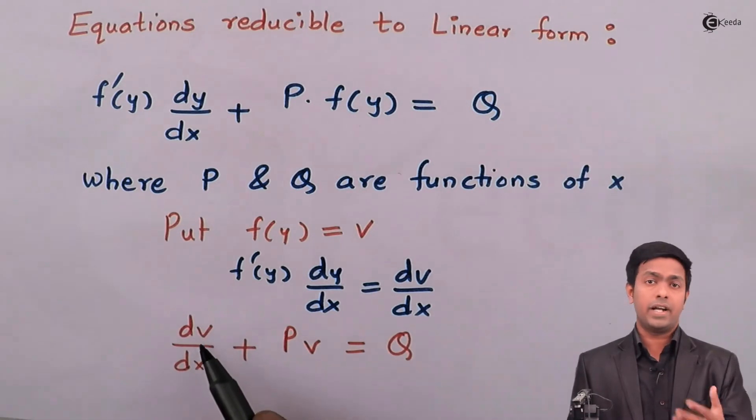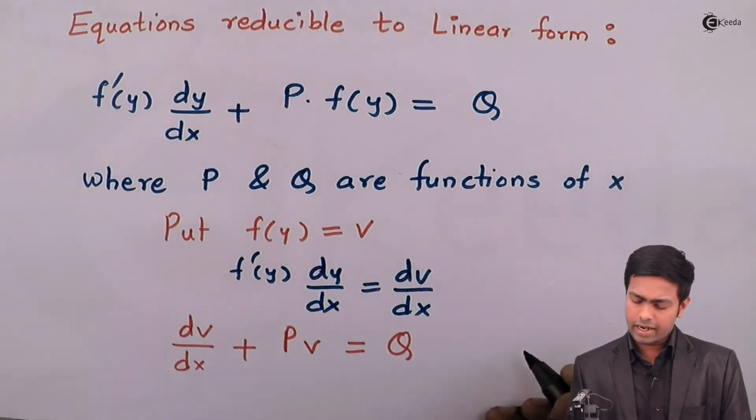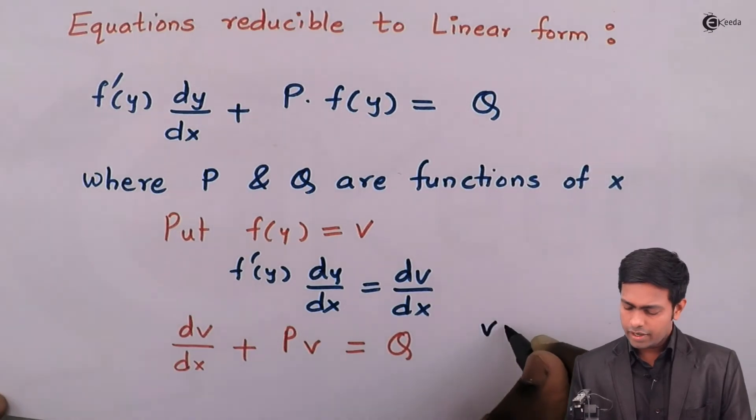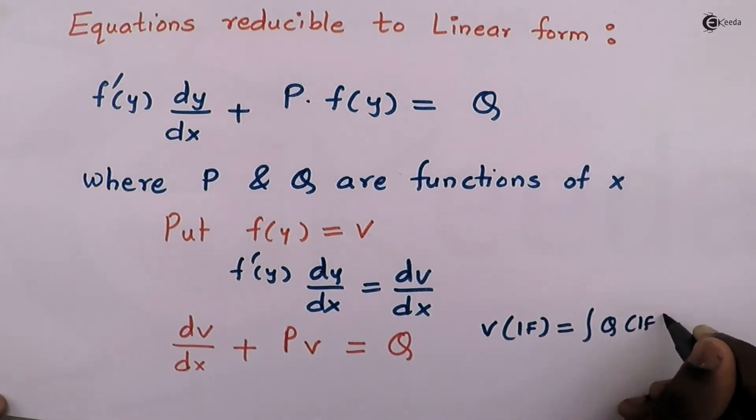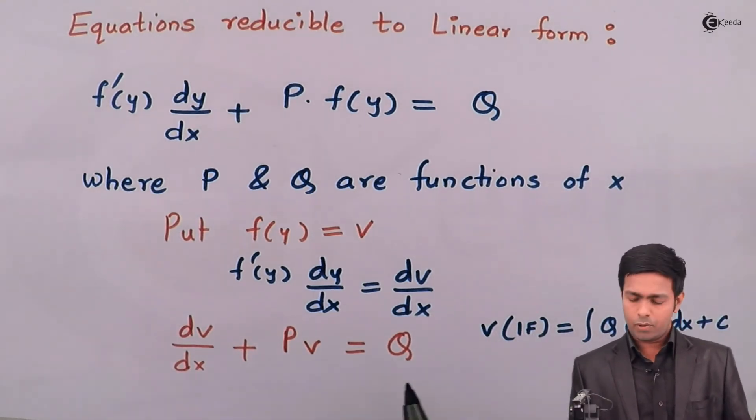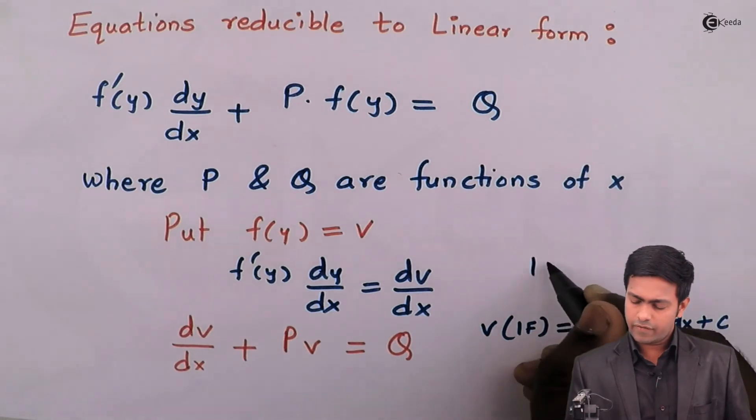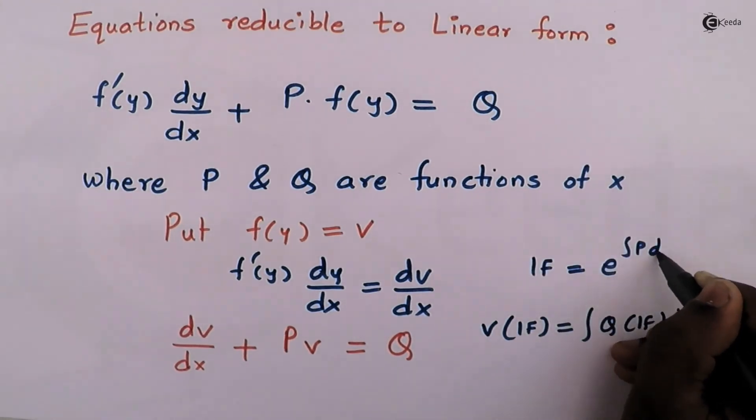Now in our case we have v as the dependent variable, so our formula will be v times integrating factor equals integration of Q times integrating factor dx plus c. To find out the integrating factor, we take help of this P, so integrating factor is generally e raised to integration of P dx.